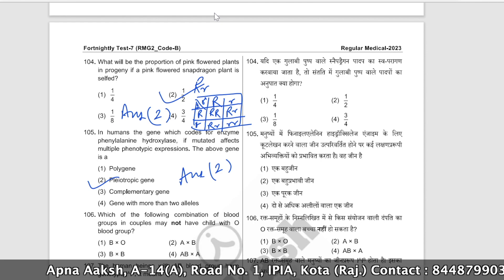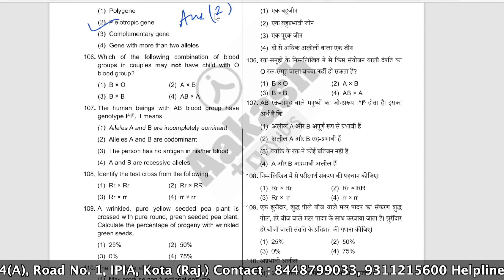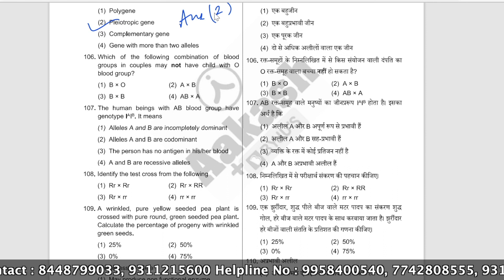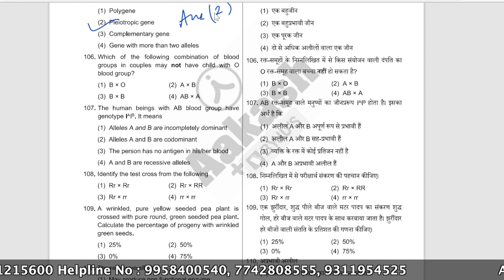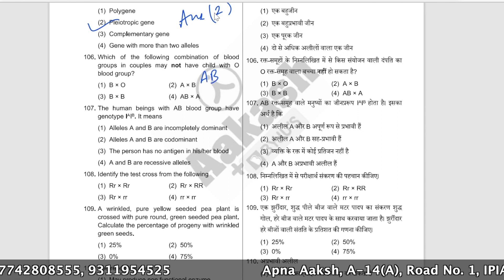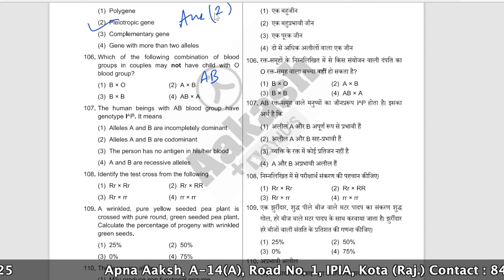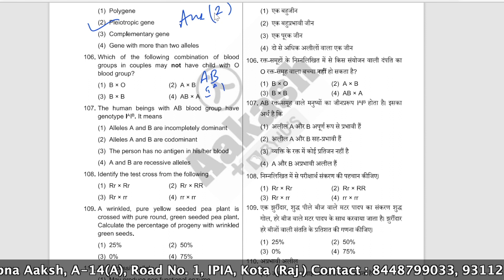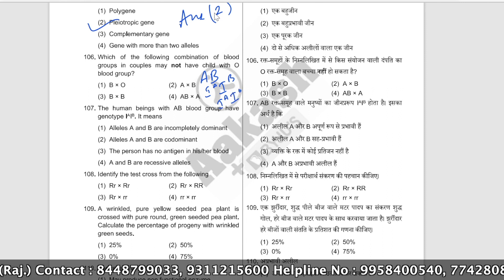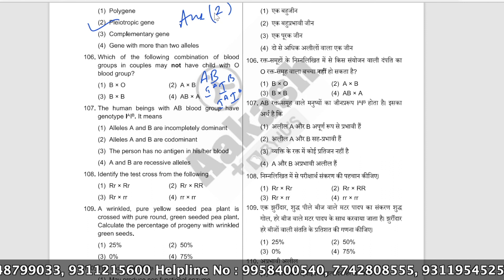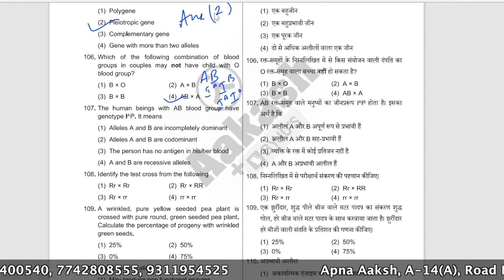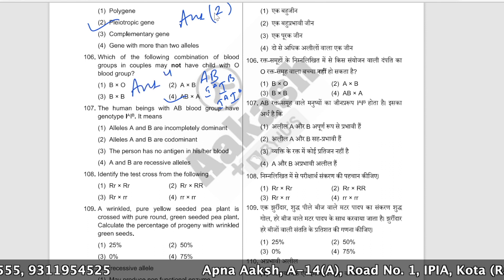Which combination of blood groups in couples may not have a child with O blood group? If the mother is AB — with genotype I^A I^B — and the father is AB as well, then neither parent can contribute two recessive alleles (i^o i^o) for O blood group. Since only I^A and I^B alleles are present, an O blood group child is impossible. The correct answer is option number four.